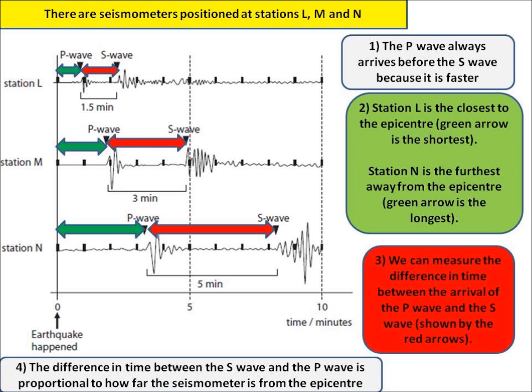We can also measure the time difference between the arrival of the P wave and the S wave, and this difference is shown by the red arrows on the diagram.